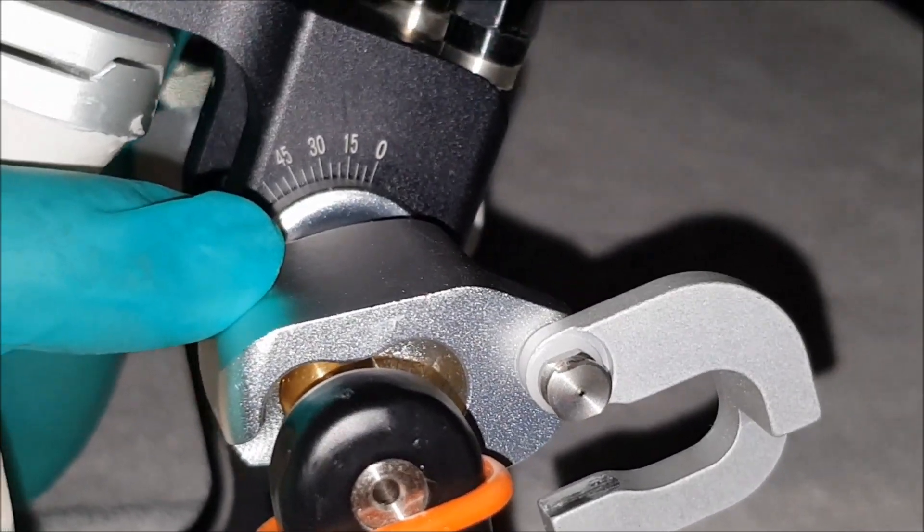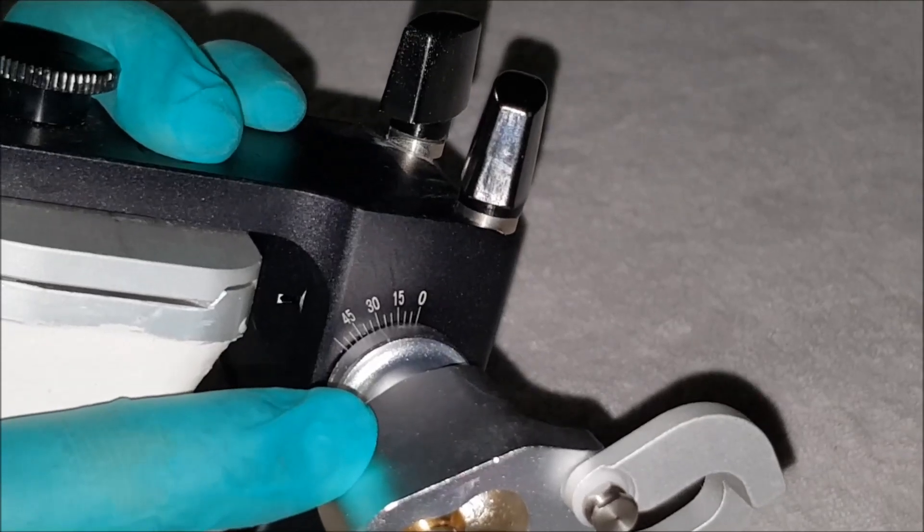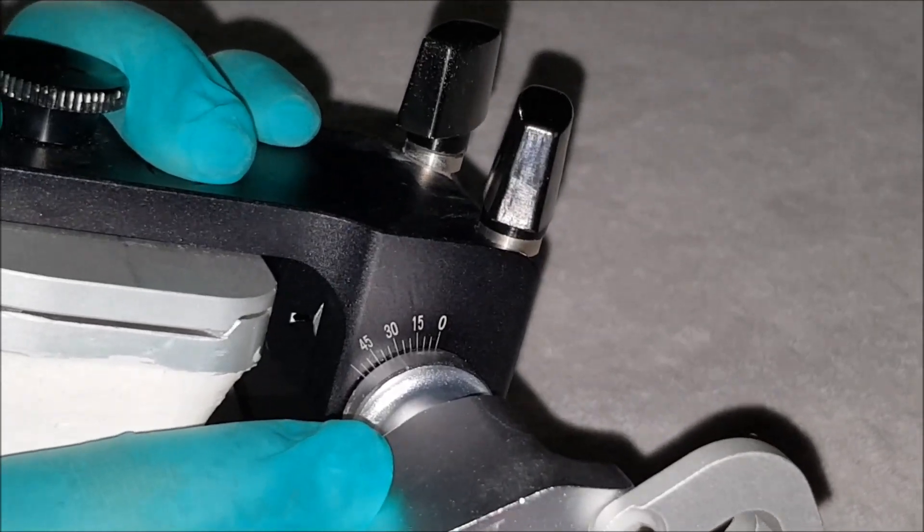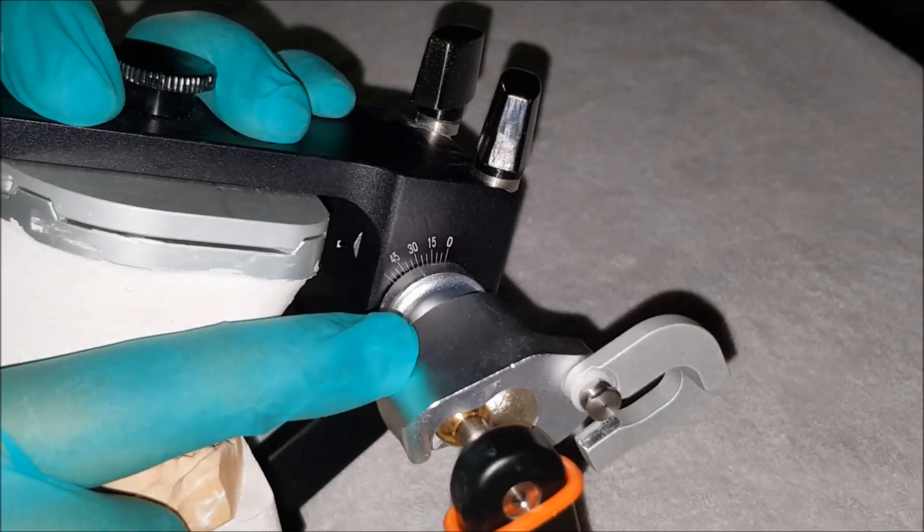The moment I have this, I once again go ahead and lock the condylar lock. This means the H value on this side on the articulator is locked. I go ahead and repeat the exact same thing on the other side.